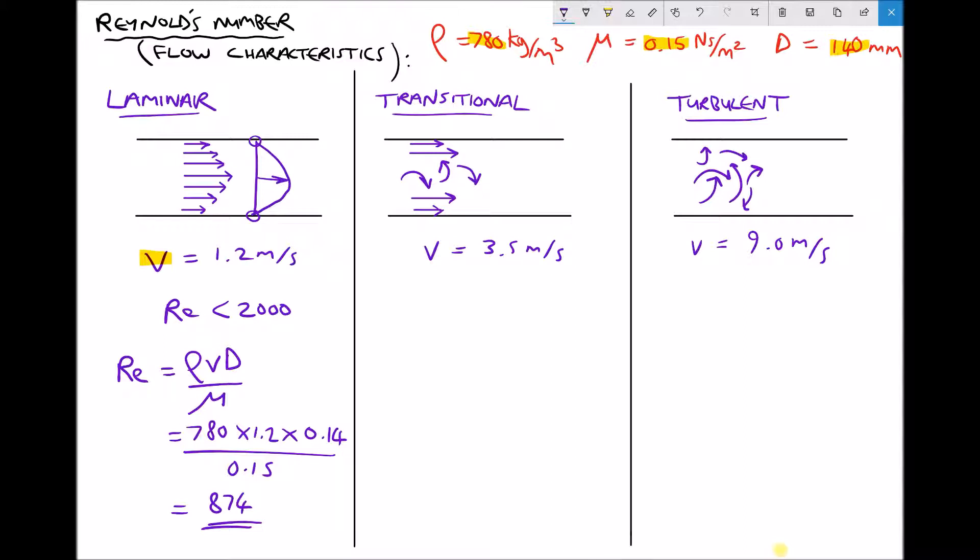Note that Reynolds number doesn't have any units. The reason it doesn't have any units is because it's what's known as a dimensionless group. If we were to evaluate the dimensions of the Reynolds number, all of the mass, length and time variables would cancel out.